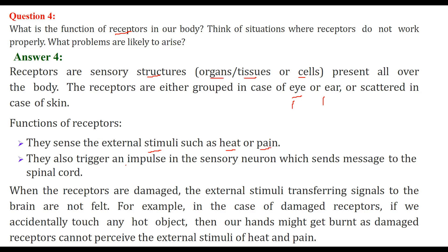Receptors also trigger an impulse in the sensory neuron, which sends a message to the spinal cord. If these receptors are damaged, the external stimuli transferring signals to the brain will not be felt. For example, in the case of damaged receptors, if we accidentally touch a hot object, our hands might burn, but we will not feel any heat or pain.